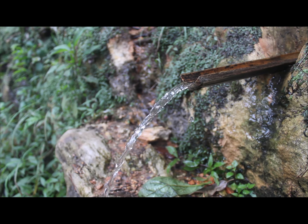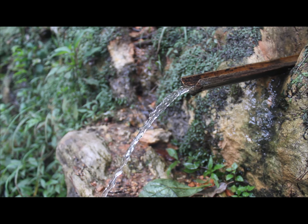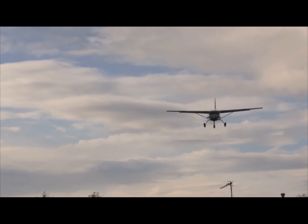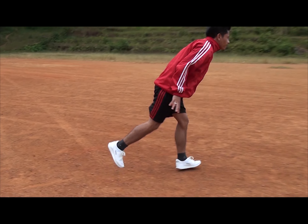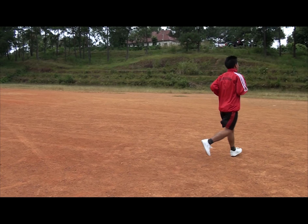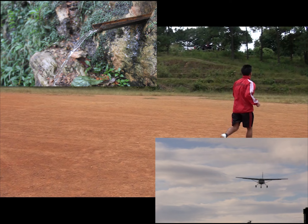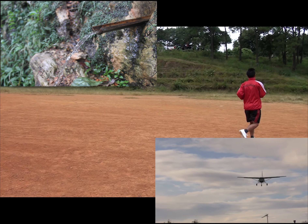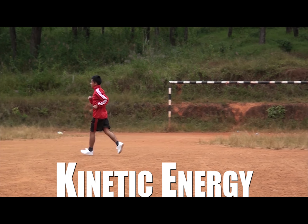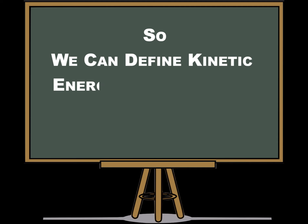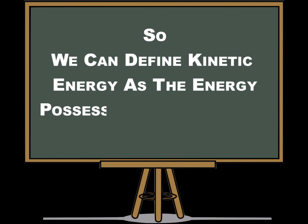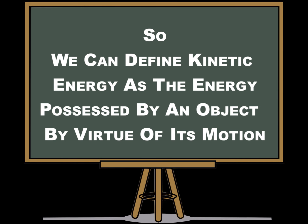Can you think of some other objects in motion that possess energy? For example, flowing water, a flying aircraft, a running athlete, etc. Yes, all of these possess kinetic energy. So we can define kinetic energy as the energy possessed by an object by virtue of its motion.